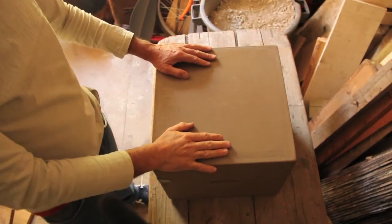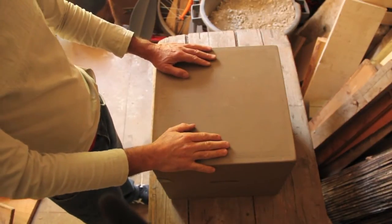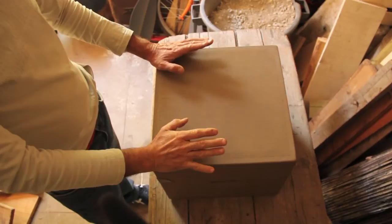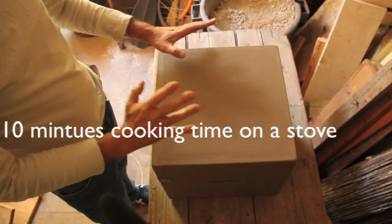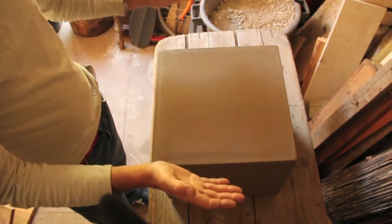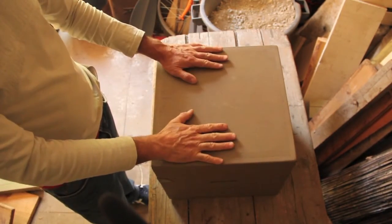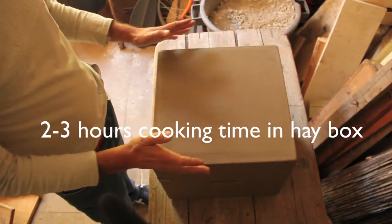If I'm going to be using grains or beans, I'll soak them the night before. Bring them to the boil for about 10 minutes. So cook, use energy, use gas or the rocket stove for 10 minutes. Transfer the pot into the hay box. Let that cook for two to three hours.